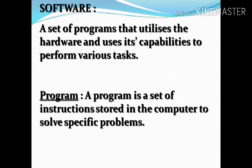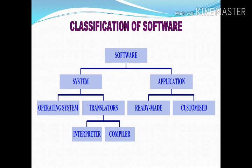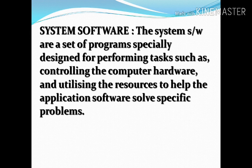Software is defined as a setup program that utilizes the hardware to use the capabilities to perform various tasks. A program is a set of instructions stored into the computer to solve a specific problem. The classification of software: system software and application software. System software can be classified into operating system and translator; translator may be interpreter and compiler. Application software can be ready-made or customized.